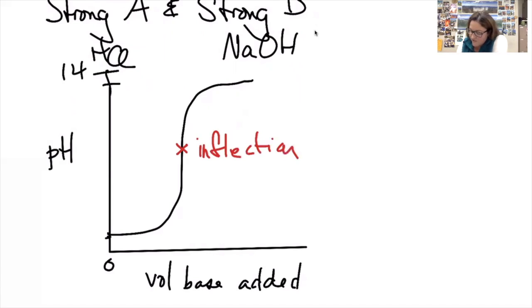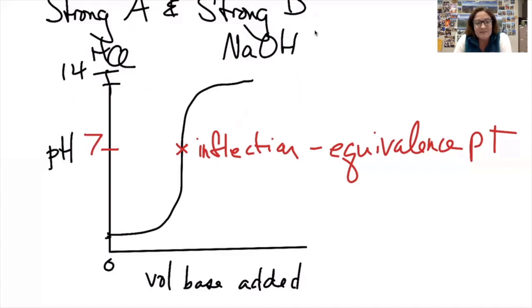This is called the equivalence point. Regardless of the titration curve, the inflection point gives us the equivalence point. For a strong, strong titration, that happens at a pH of 7. For a weak, strong titration, it happens at a different pH.